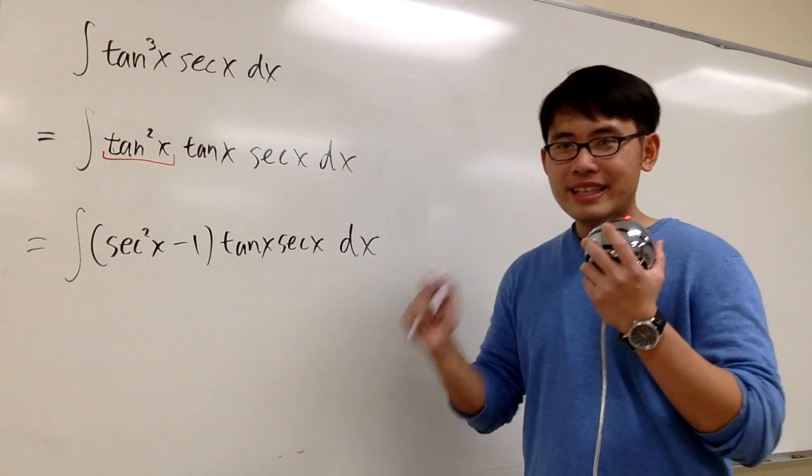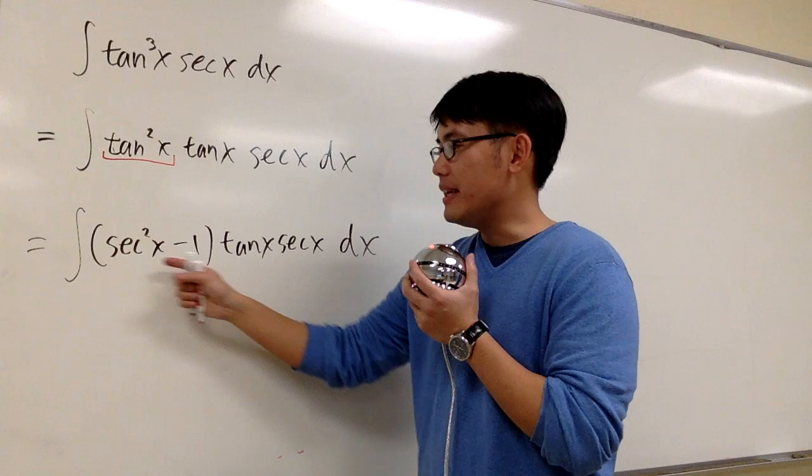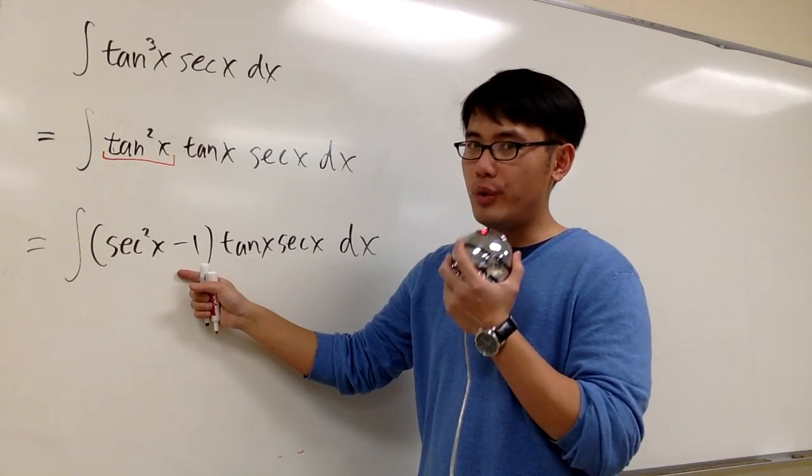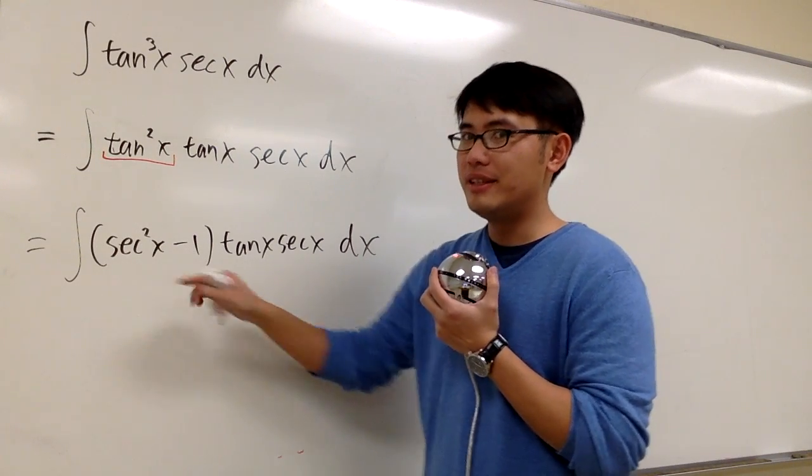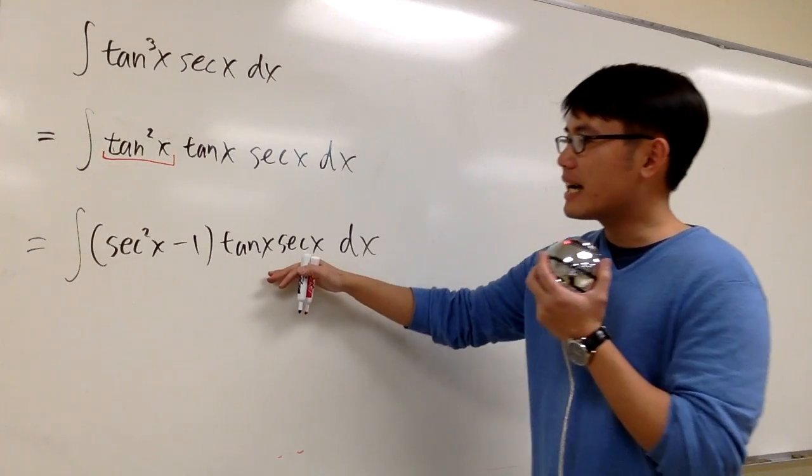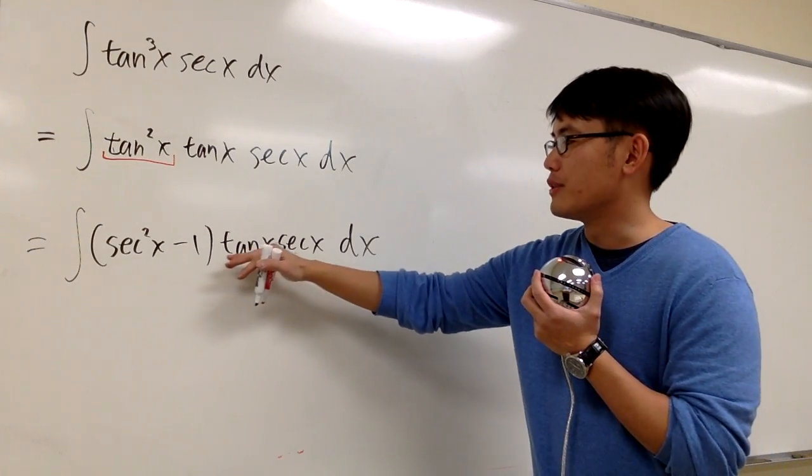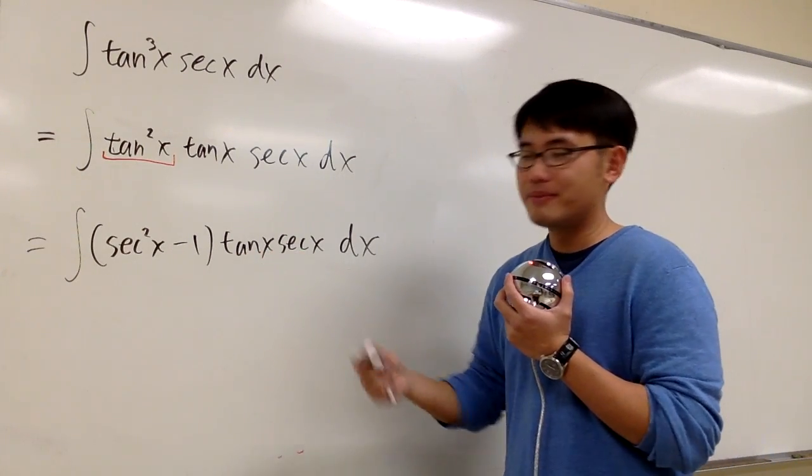And now what? Guess what? Look at the inside. If I let u equals to secant x, this equation is done. Because I have exactly the derivative of secant right here. You know, secant x tangent x. Let me show you.